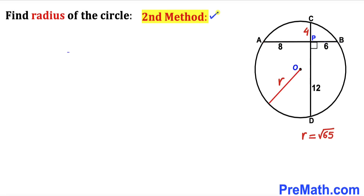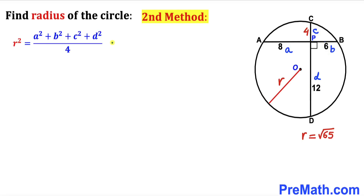Now I'm going to share the second method to calculate the radius r. Let me label segment AP as a, PB as b, CP as c, and PD as d. Then a = 8, b = 6, c = 4, and d = 12 units.